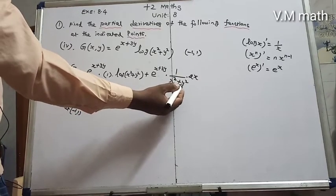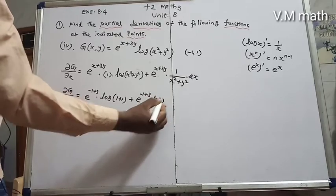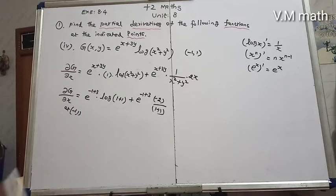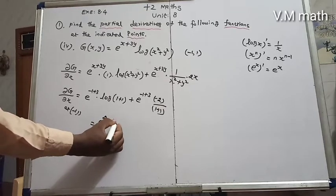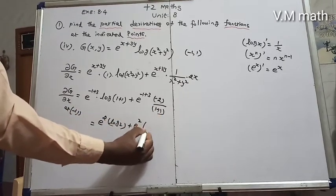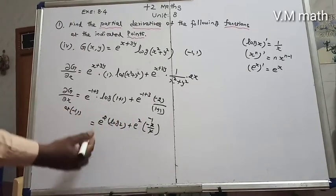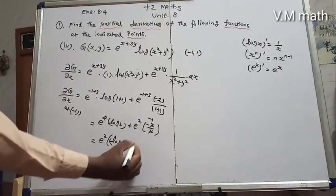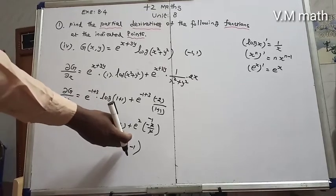At x = -1, y = 1: the exponent gives -1 + 3 = 2, so e². The log term gives log(1 + 1) = log 2. The second term gives e² times 2×(-1) divided by (1 + 1) = -2/2 = -1. So the result is e² log 2 + e²×(-1), which simplifies to the first answer: e² log 2 minus 1.